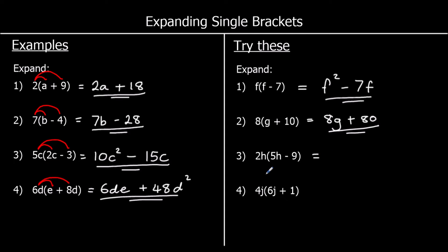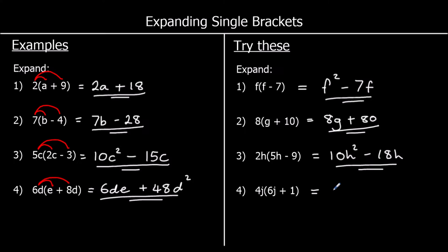The third one: 2h times 5h — 2 times 5 is 10, and h times h is h squared. 2h times a negative 9 is going to be negative, and 2h times 9 is 18h. And the fourth one: 4j times 6j — 4 times 6 is 24, j times j is j squared. And 4j times 1 is just 4j.